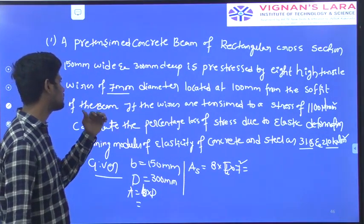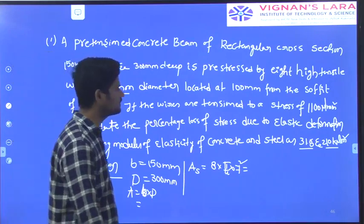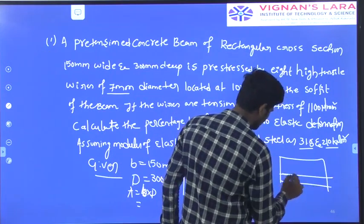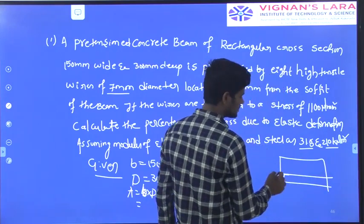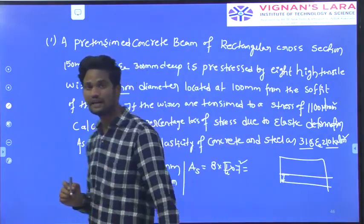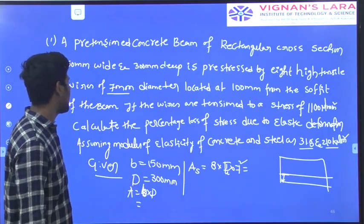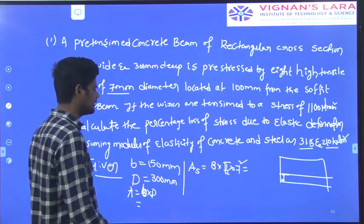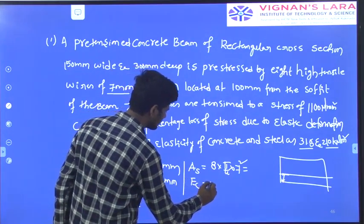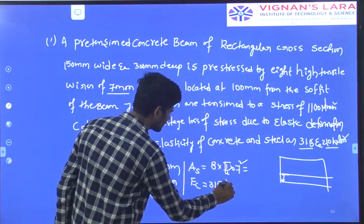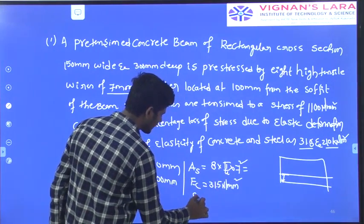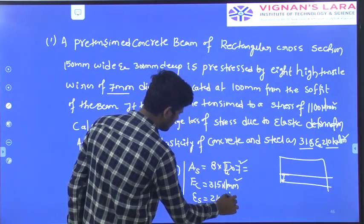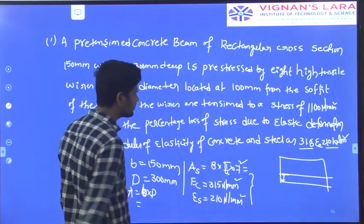The steel wires are located 100 mm from the soffit, which is the bottom of the beam. They are asked to calculate the percentage loss of stress due to elastic deformation. The given parameters are: EC = 31.5 N/mm² and ES = 210 N/mm².